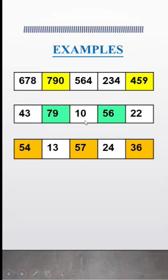10 and 22 are the adjacent cells of 56. 56 is greater than its adjacent cells, therefore 56 is the supercell. 54 and 13: 54 is greater than its adjacent cell, therefore 54 is the supercell.